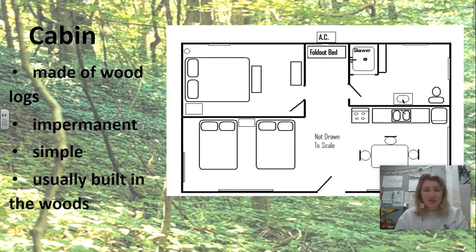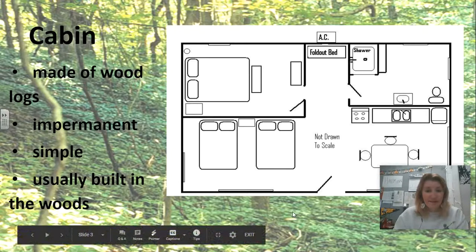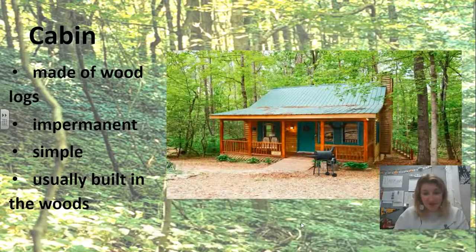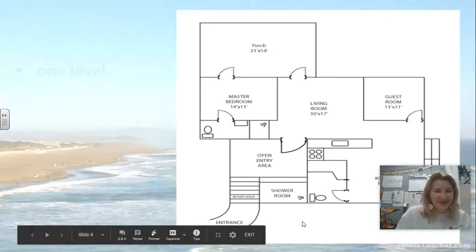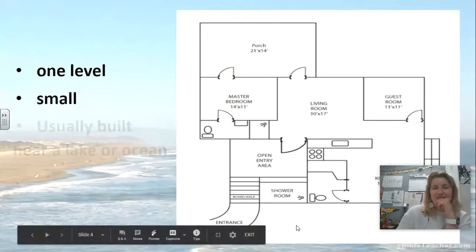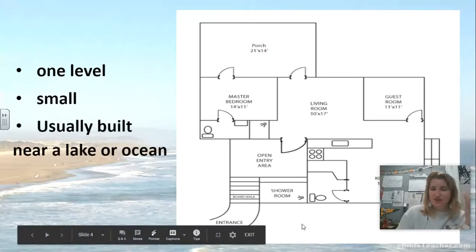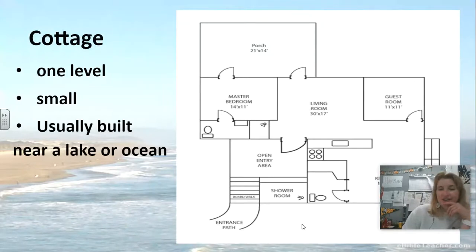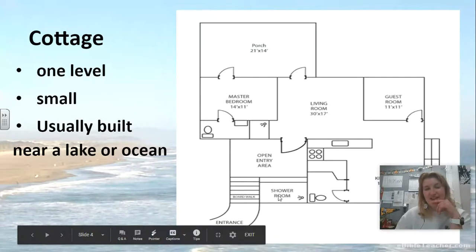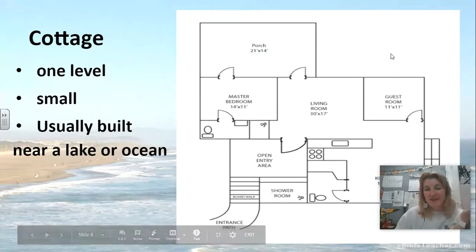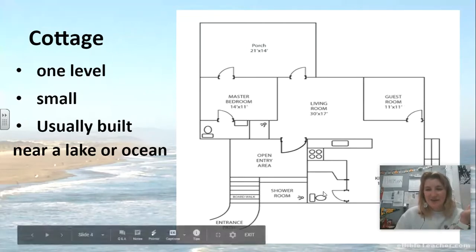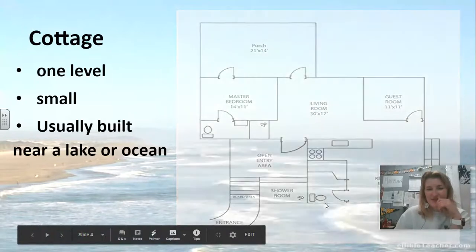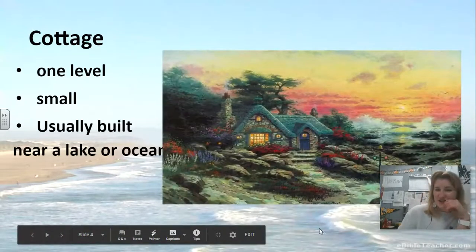Cabins usually have a lot of sleeping spaces — you can see a lot of beds in the floor plan. From the outside, this is what it would look like. I feel like that's pretty fancy for Wisconsin. Here's another one you might not guess. This is all on one level, small, usually built near a lake or an ocean. It's not necessarily a cabin, but a cottage. There's a ton of these by the ocean, with a lot of porch space so people can go outside and look at the water. Here's a nice picture of a cottage — very cute.